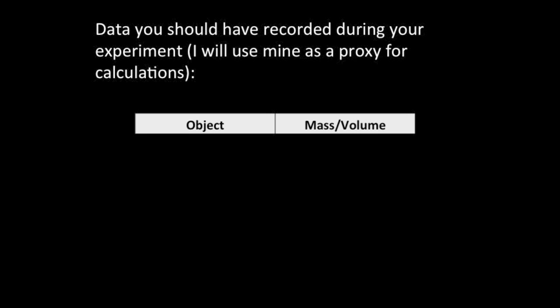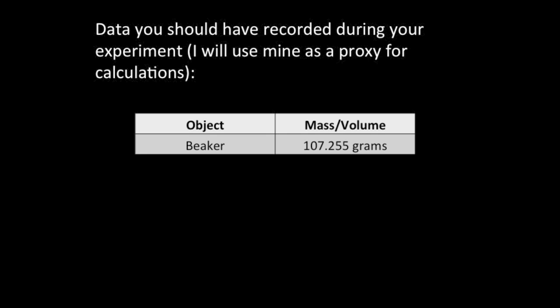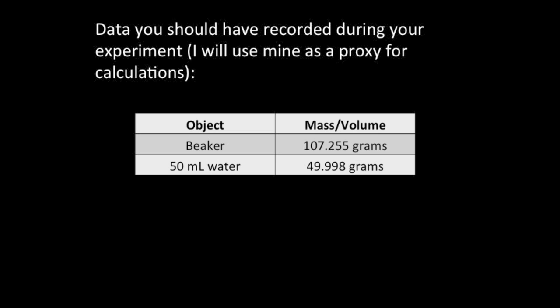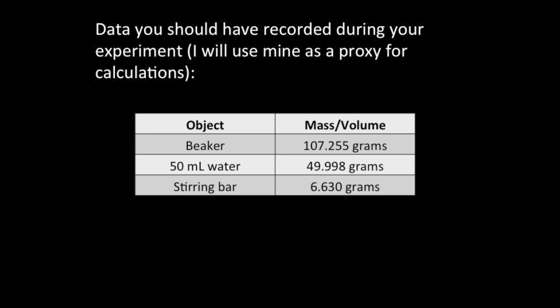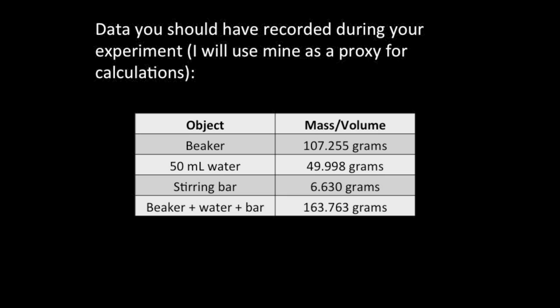Here's a list of the values you're going to need to calculate the percentage of acetic acid. First, the mass of the beaker. Second, the mass of your water that you added to the beaker. Third, the mass of the stirring bar that you used. To shorten the calculations for the mass of mustard used, combine all of the above values into one. You'll see why next.